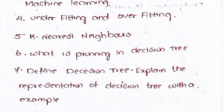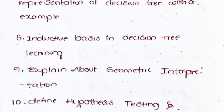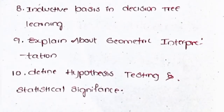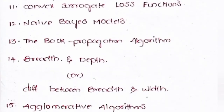Sixth: what is pruning in decision tree. Seventh: define decision tree and explain representation of decision tree with example. Eighth: inductive bias in decision tree learning. Ninth: explain about geometric interpretation. Tenth: define hypothesis testing and statistical significance. Eleventh: convex surrogate loss function. Twelfth: the naive Bayes model.